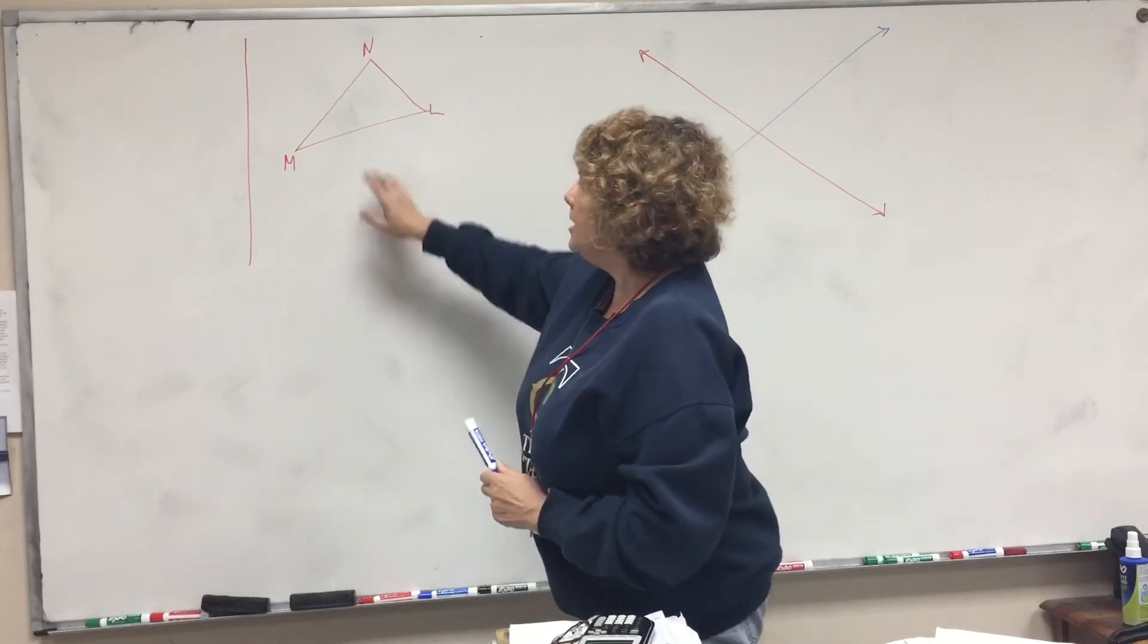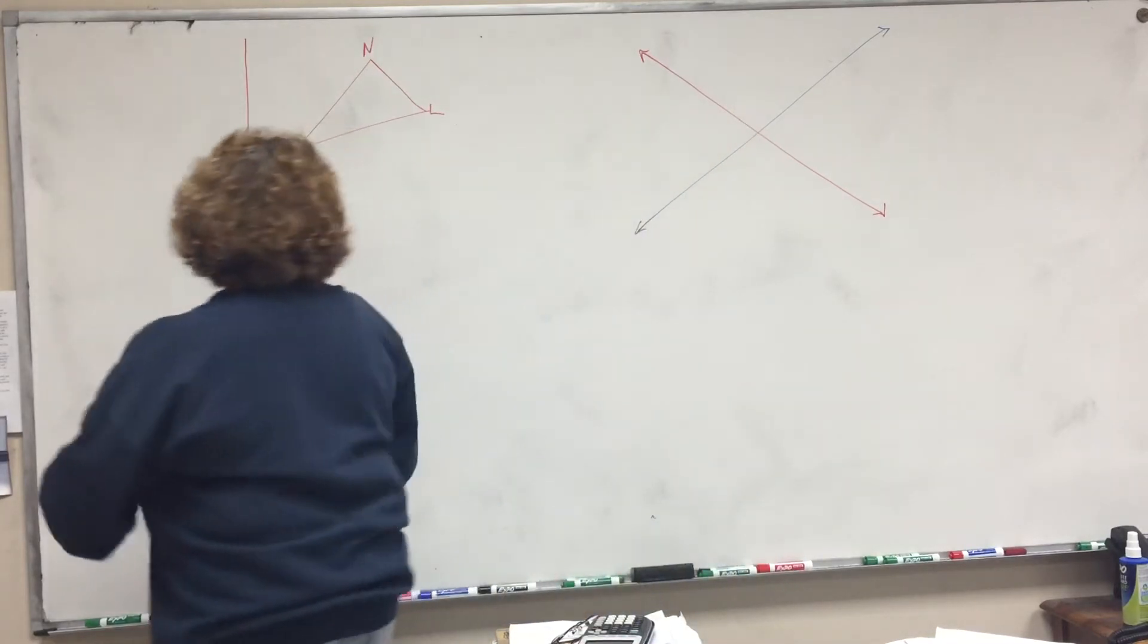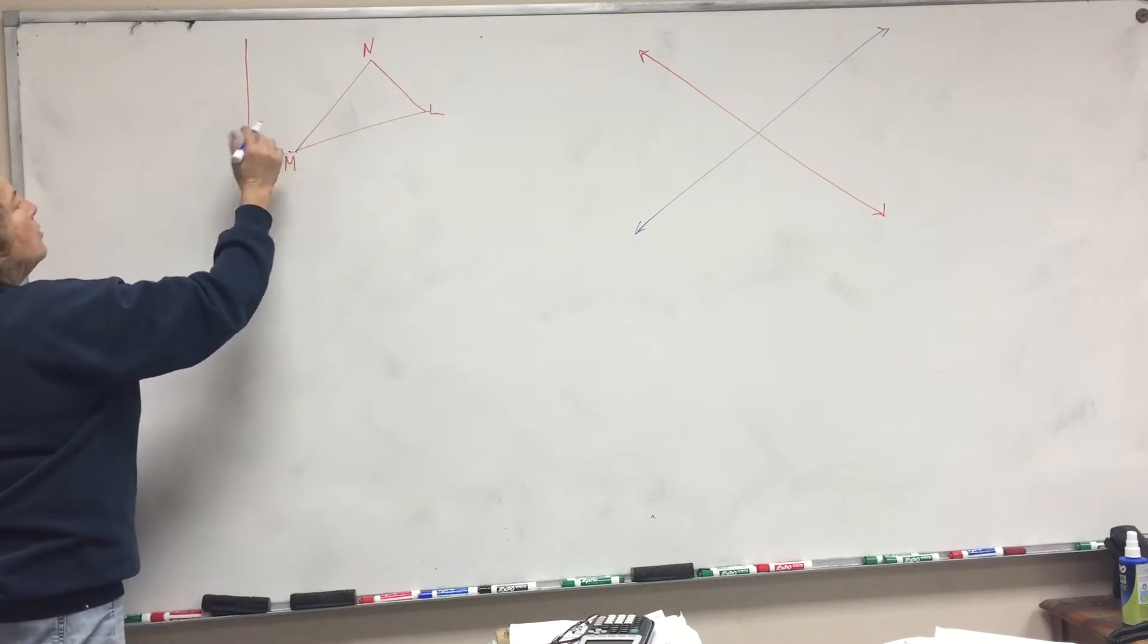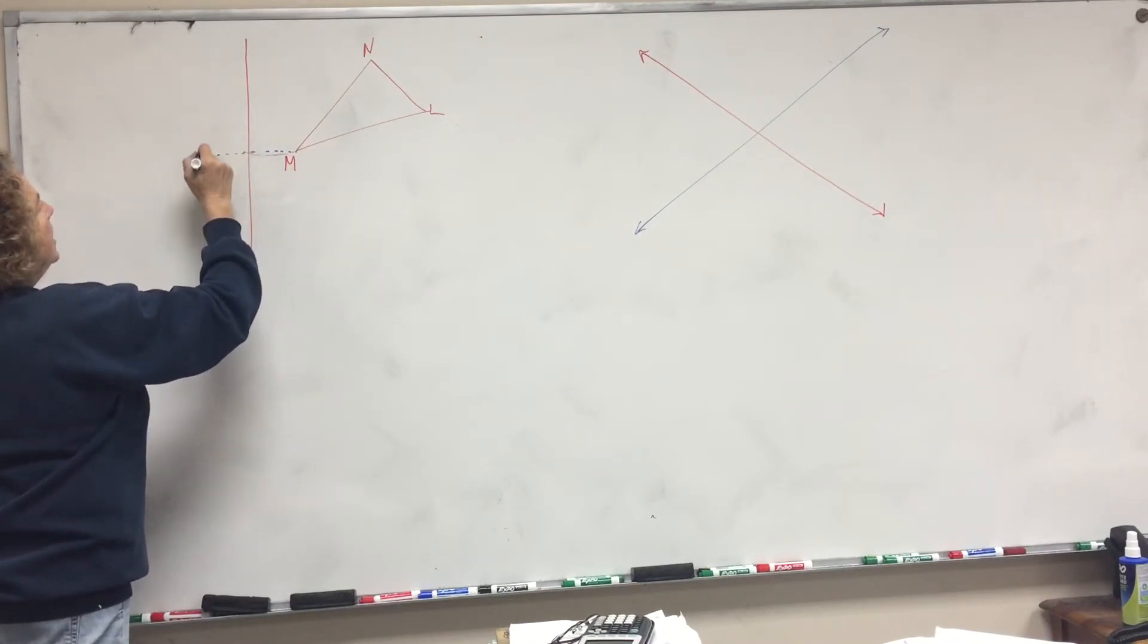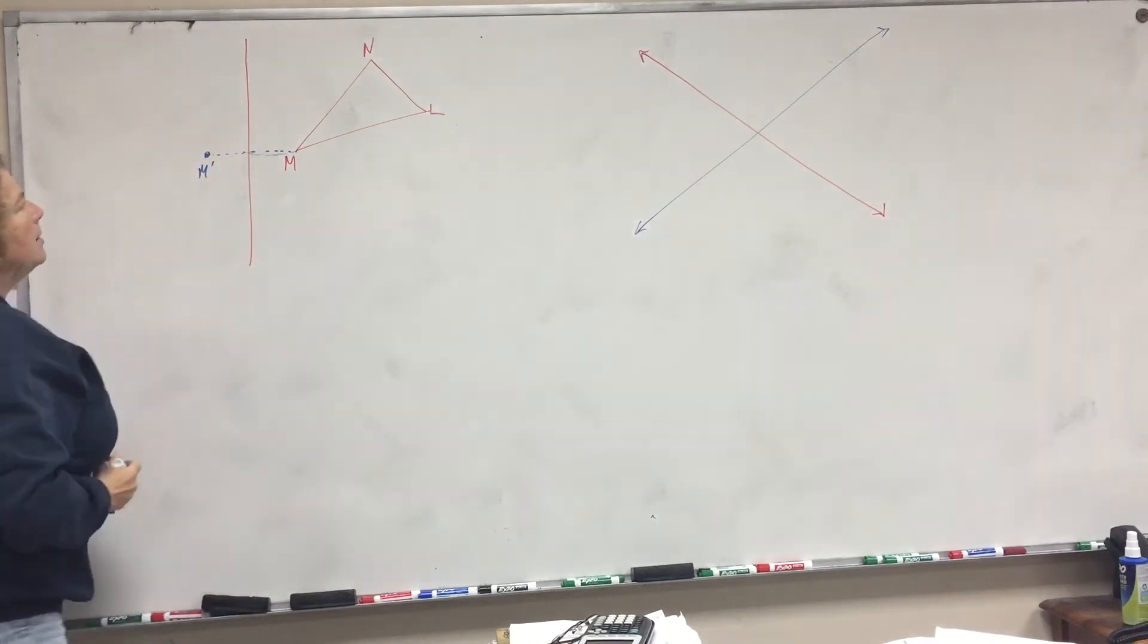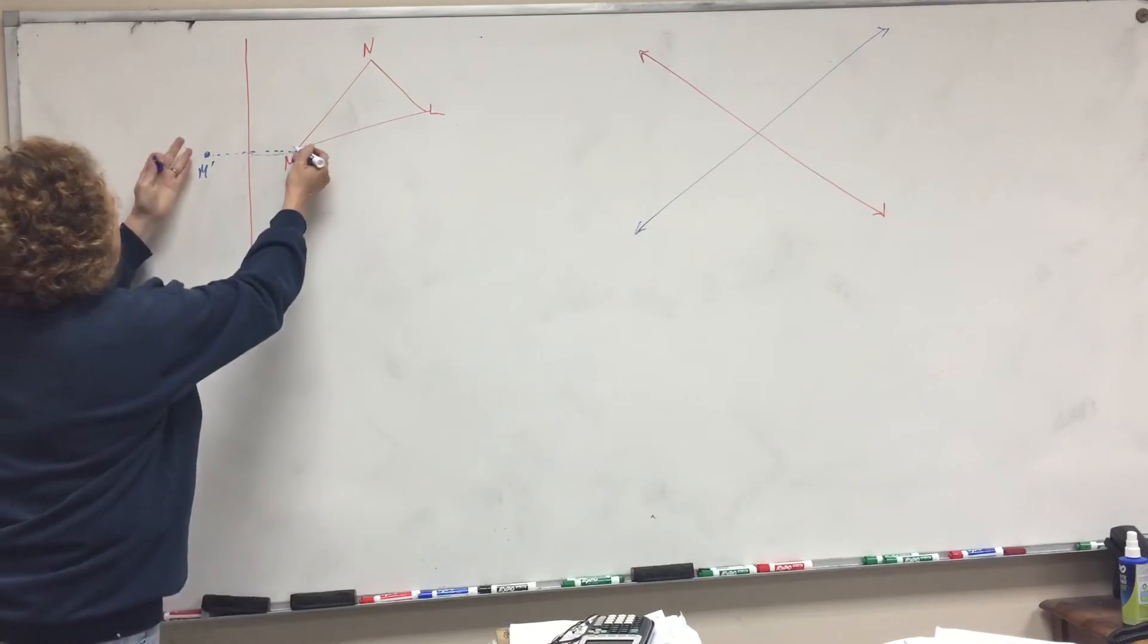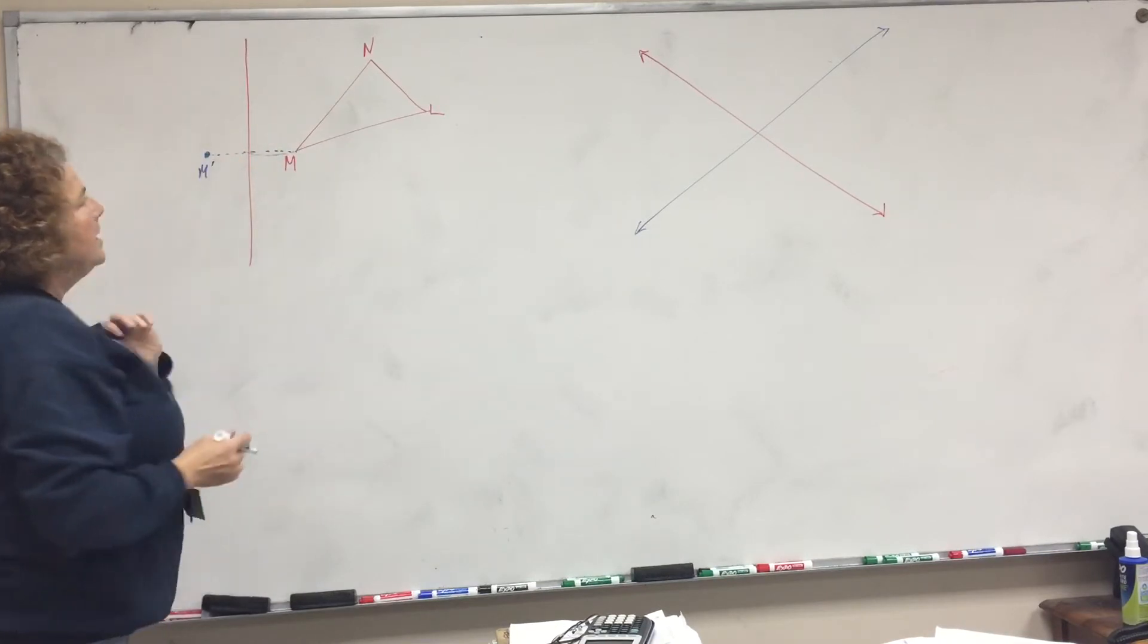So take a look here. What you do is measure how far M is from the line, go straight across, and do the same distance over there. Put a little dot and label it M prime. This is exactly reflected - pretend M is looking in the mirror and seeing M prime.